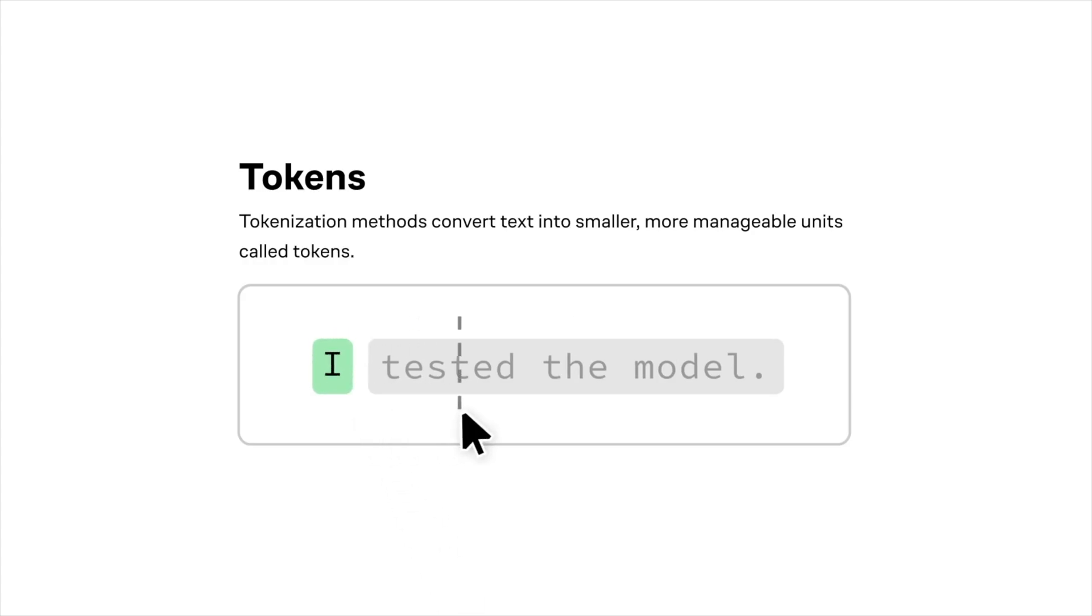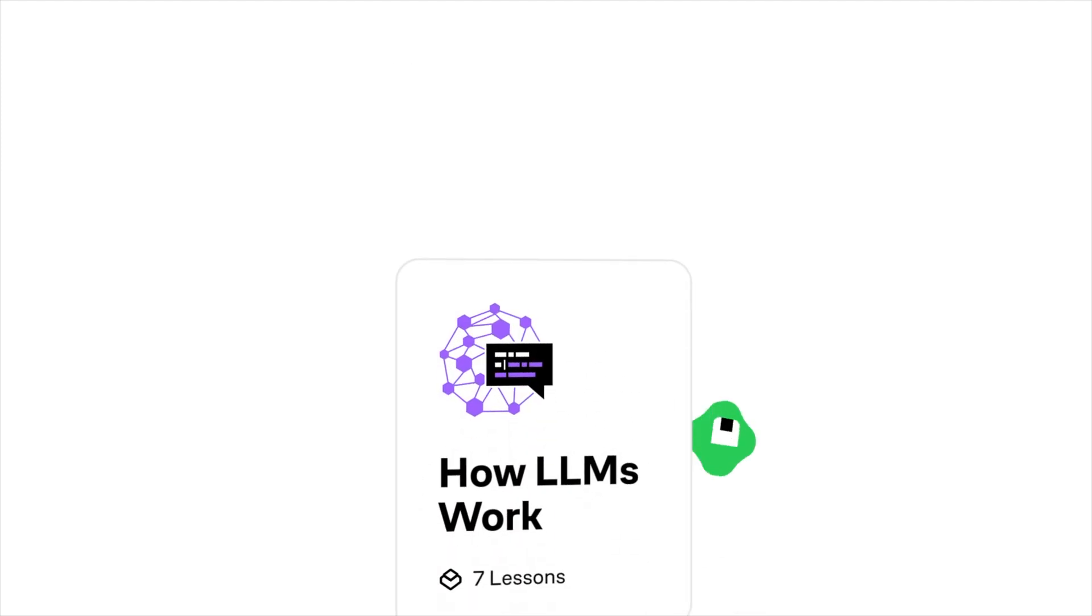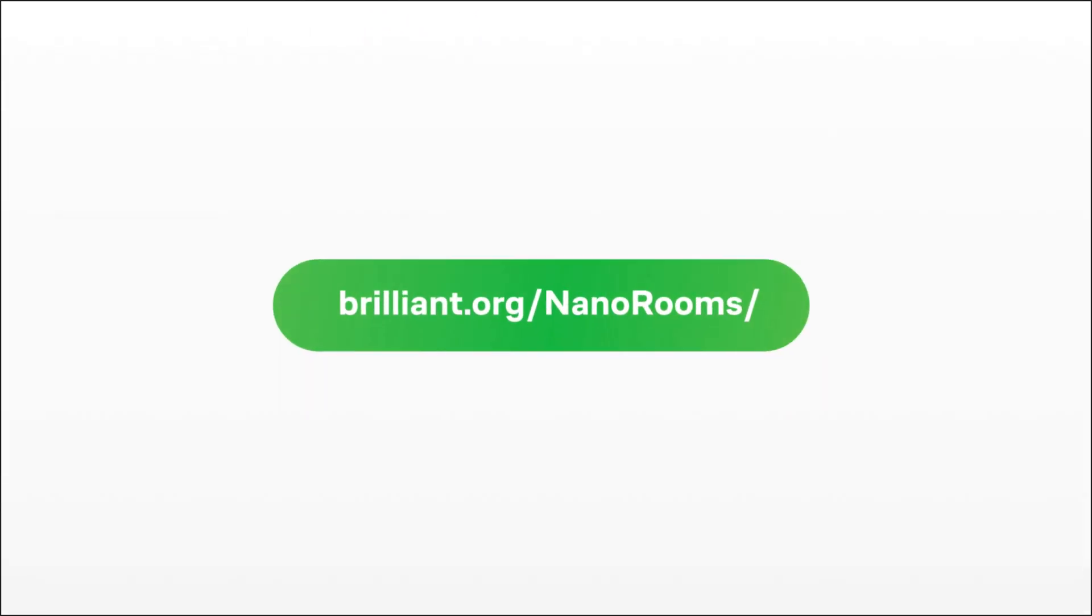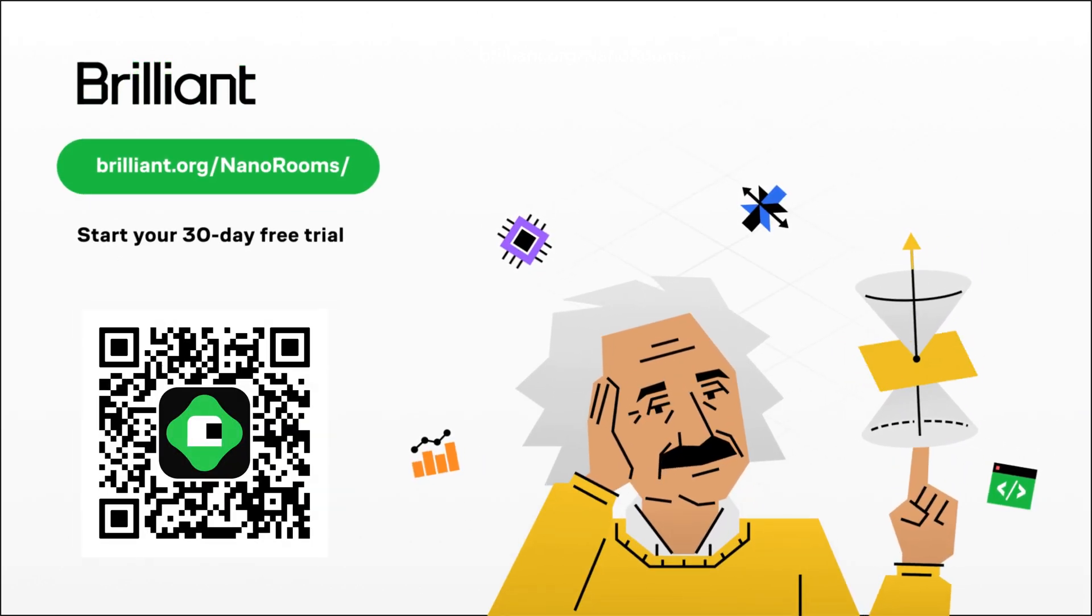So, with Brilliant, you can now build and use formulas to solve real-world problems in business and everyday life. Peek under the hood of large language models such as ChatGPT to understand concepts powering today's technology. To try everything Brilliant has to offer for free, a full 30 days, visit brilliant.org slash nanorooms or scan the QR code on the screen. You can also click the link in the description and you'll also get 20% off an annual premium subscription.